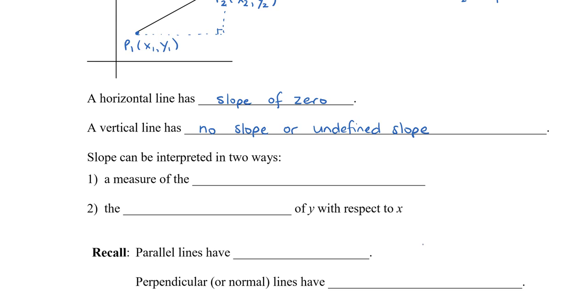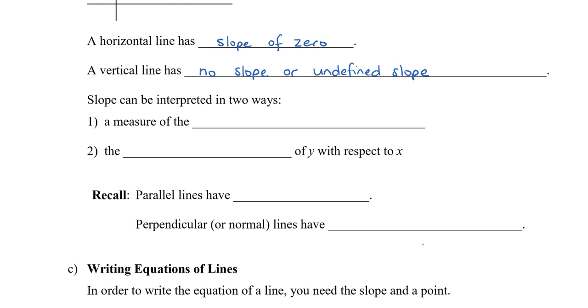In calculus, in the first part of the term, slope is really important. We need to remember that slope can be interpreted in two ways. It is a measure of the steepness of the line, but it could also mean the rate of change of y with respect to x.